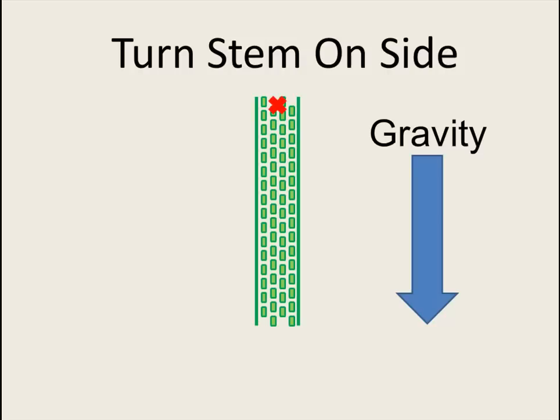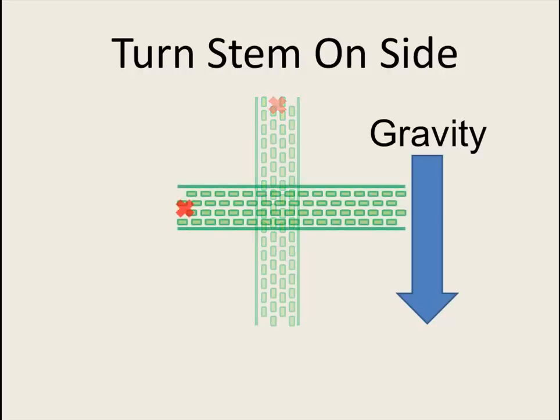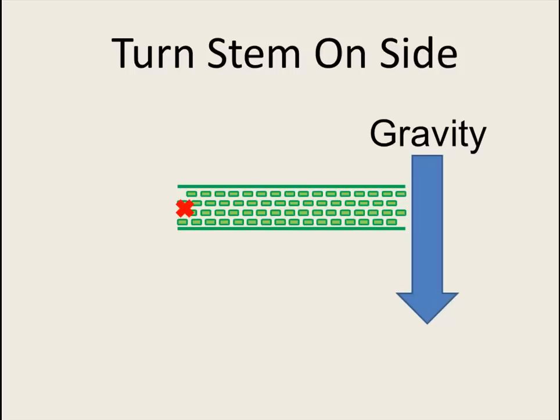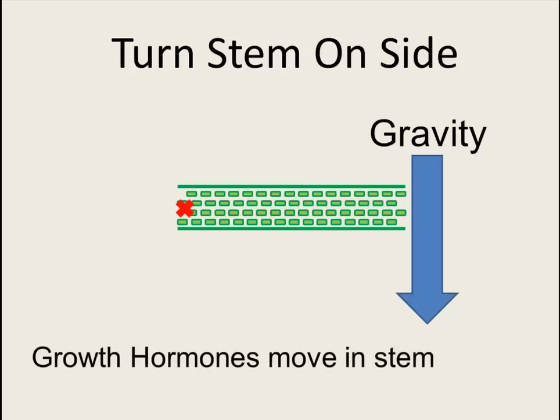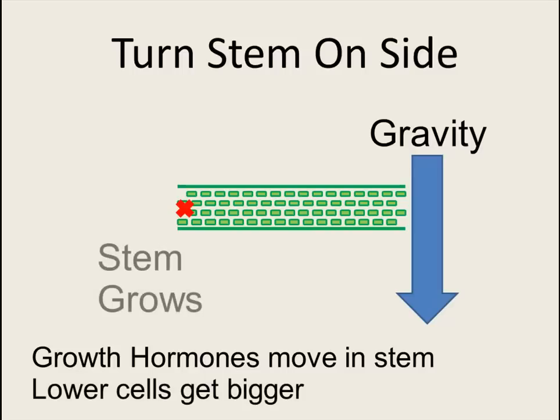If you turn the stem on its side, gravity is still pulling it down. The growth hormones move in the stem, particularly in the tip where the stem gets longer. The lower cells get bigger, and the stem grows like this.